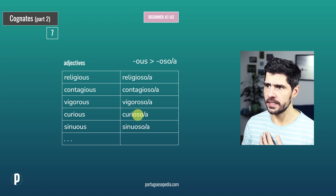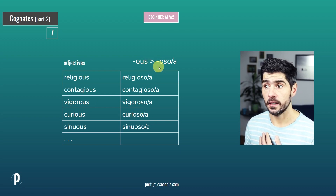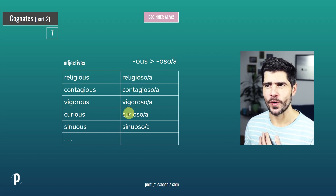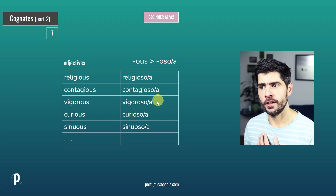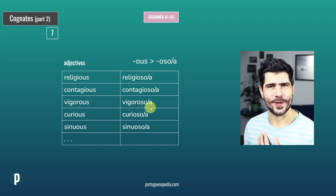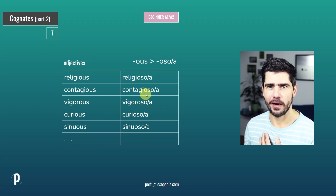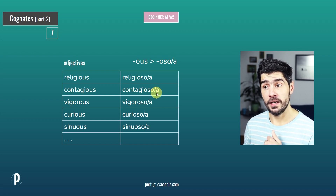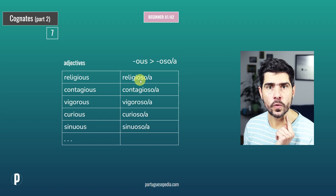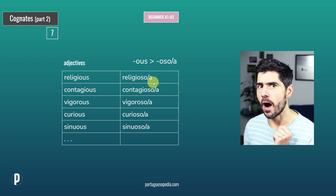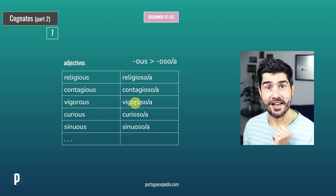Group number seven: -OUS in English becomes -OSO or -OSA in Portuguese. So religious becomes religioso. Contagious — contagioso, contagiosa. Vigorous — vigoroso, vigorosa. Notice something: this O will change its vowel sound depending on whether it is the masculine or feminine form. When we go to the feminine with A at the end, the O sound opens up. Listen: religioso — religiosa. Vigoroso — vigorosa.